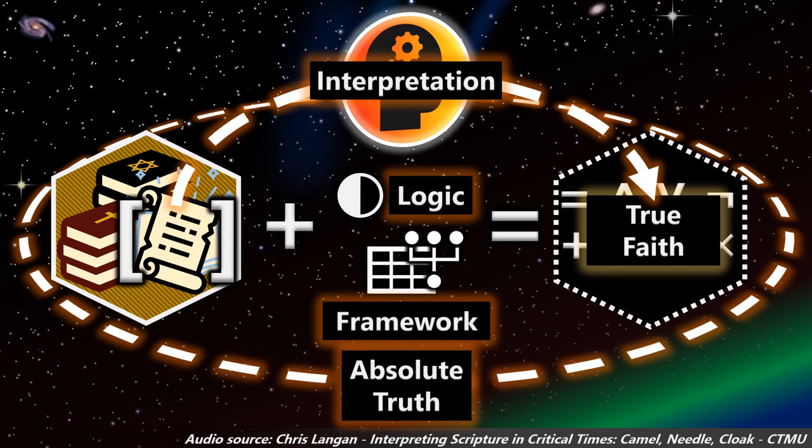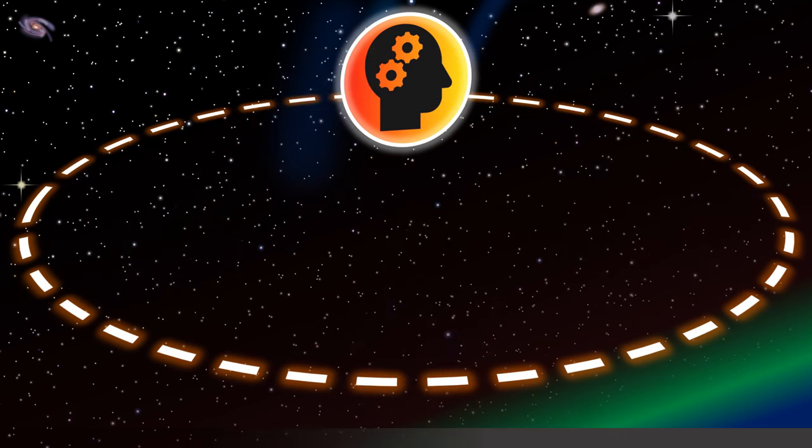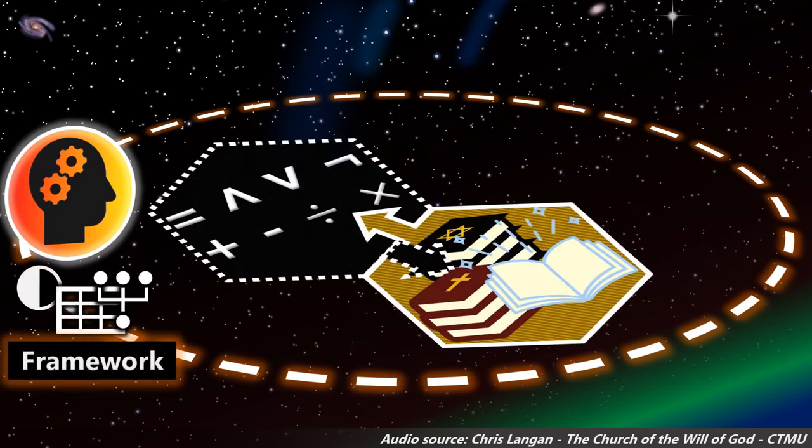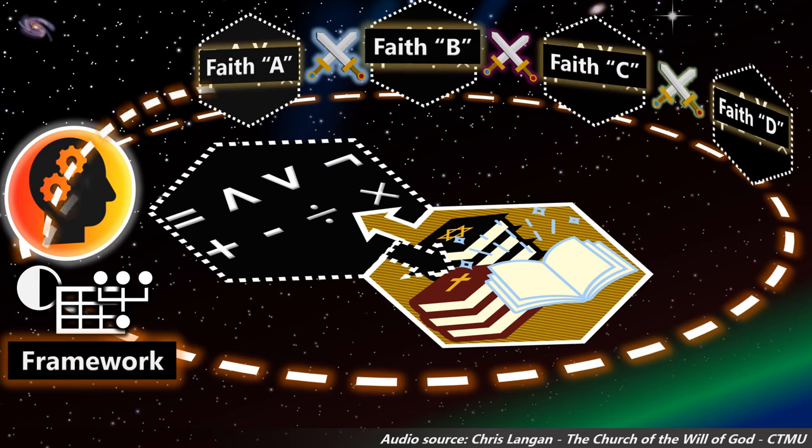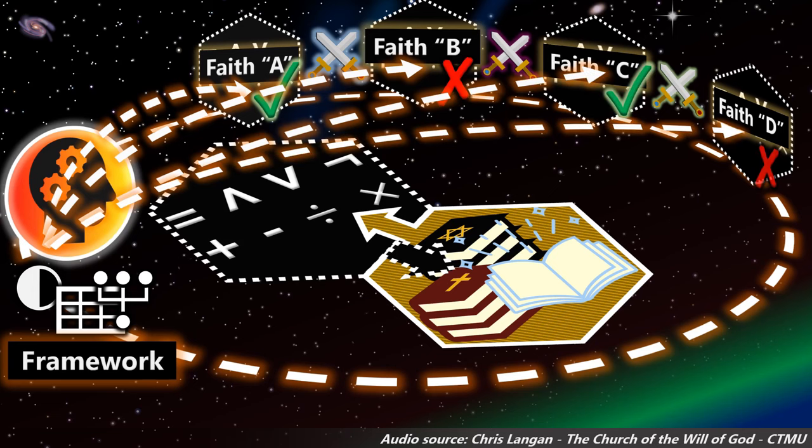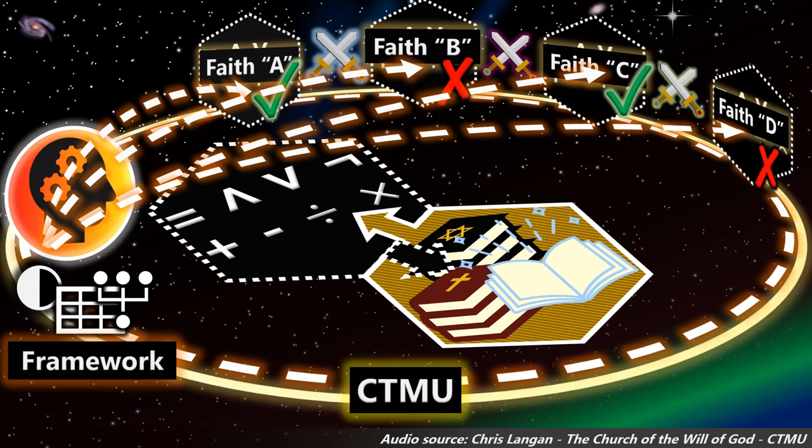In other words, absolute truth, or logic itself, which is ascribed to scripture but not explicit in scripture itself, has a particular form in terms of which all scripture must be interpreted. What we needed to present was a logical framework in which everyone's faith could be interpreted up to its degree of logical consistency. That's what the CTMU is.